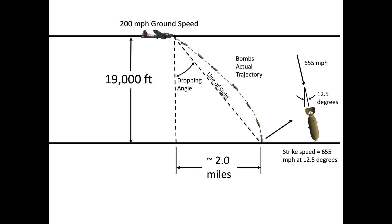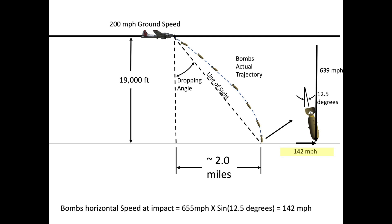The bomb's horizontal speed will have slowed from 200 miles per hour at release to 142 miles per hour at impact. The reduction in horizontal speed is due to the airstream drag during freefall.